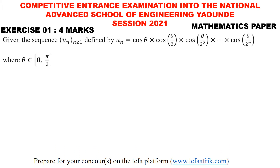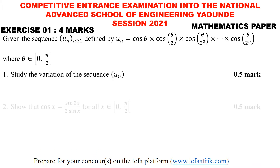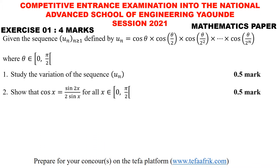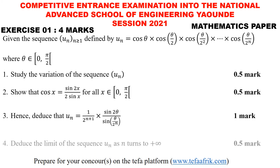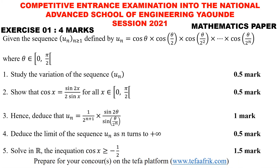The equation reads: given the sequence UN defined by that product for theta in the interval 0 to pi on 2. Here is equation 1, equation 2, equation 3, equation 4, and equation 5.